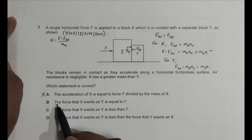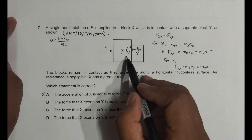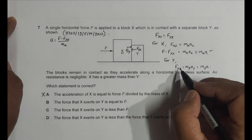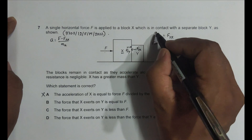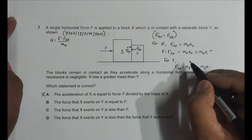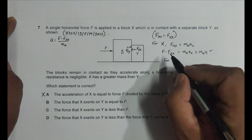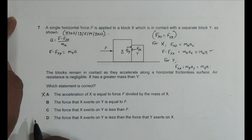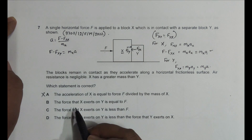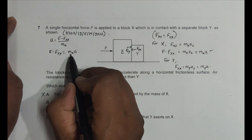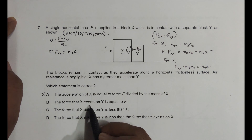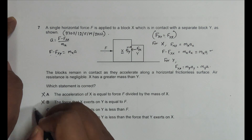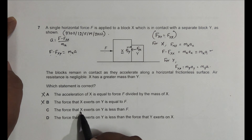Option B states that F_XY = F. This is not true. Since F_XY equals F_YX by Newton's 3rd law, substituting into the equation for X gives: F - F_XY = M_X × a. If F_XY were equal to F, the left side would be zero, which would imply zero net force and zero acceleration — which is a contradiction. So option B is false.